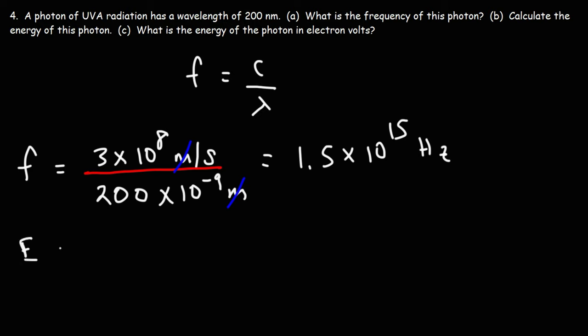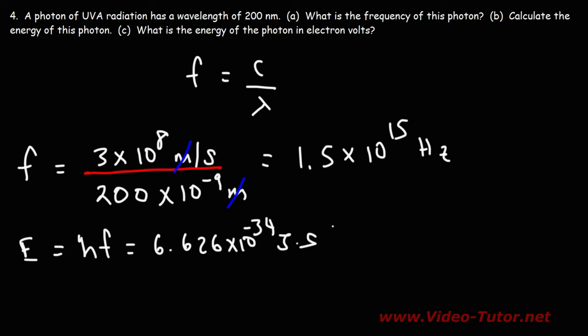Now let's calculate the energy. The energy of the photon equals Planck's constant times the frequency: 6.626 times 10 to the negative 34 joules·seconds, multiplied by 1.5 times 10 to the 15 hertz. The seconds unit cancels, giving the energy in joules: 9.939 times 10 to the negative 19 joules. That is the energy of a single photon of UVA radiation with a wavelength of 200 nanometers.